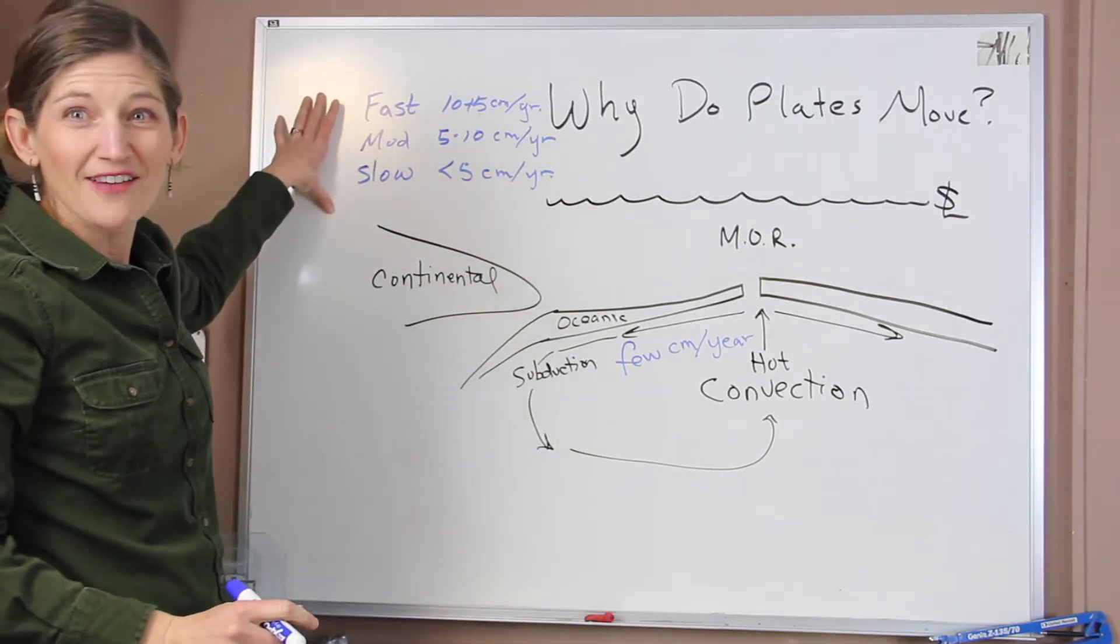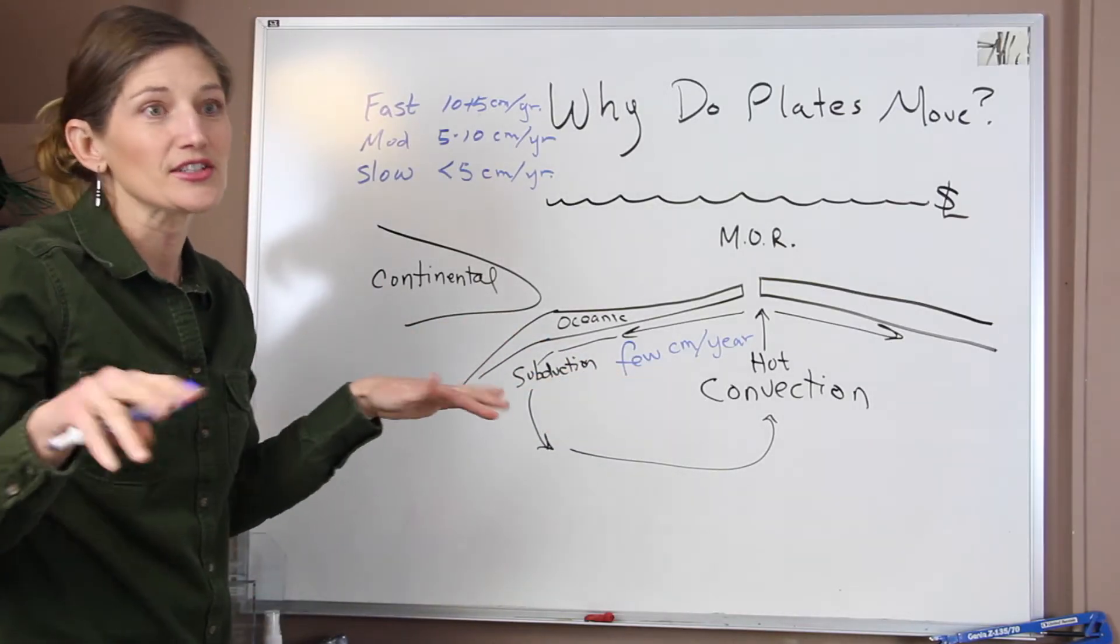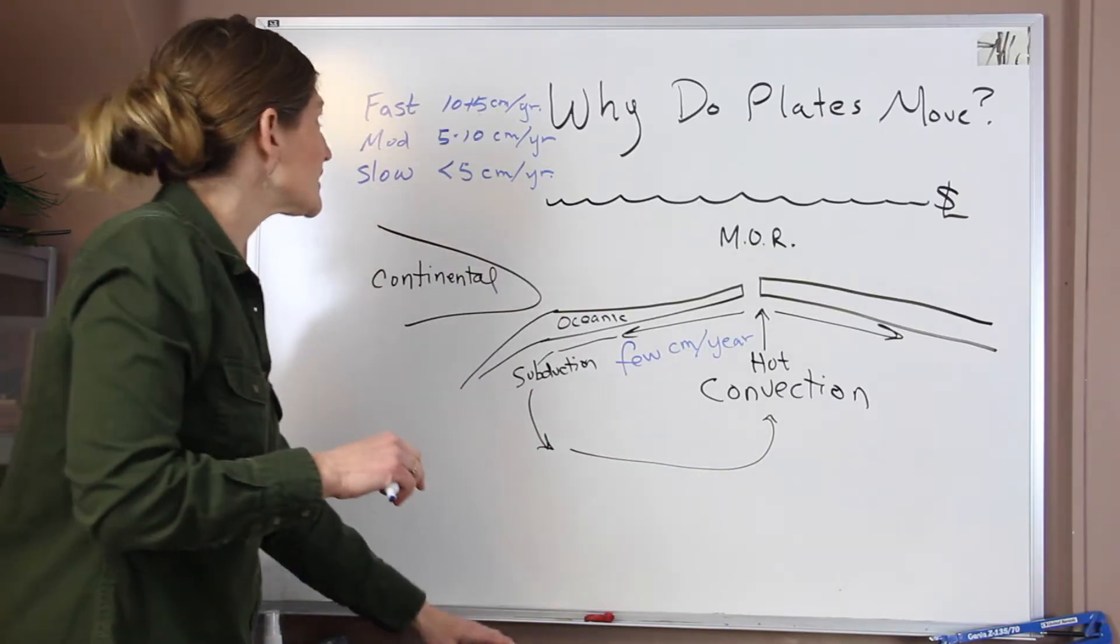So if we have all these different movements, it can't just be convection in the mantle that's just having these plates kind of move passively along. So what else is happening?